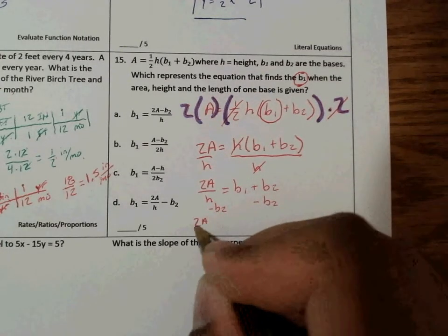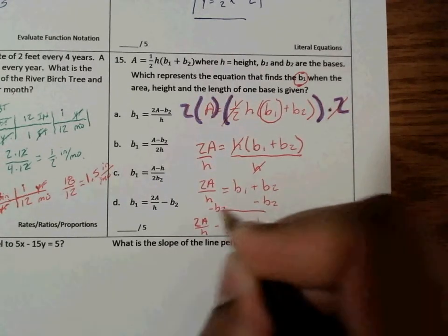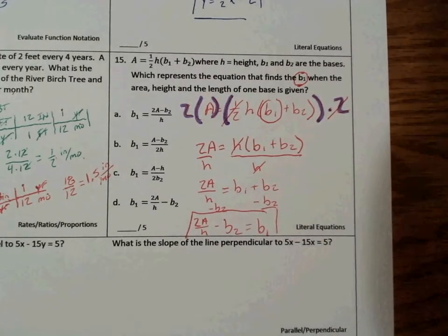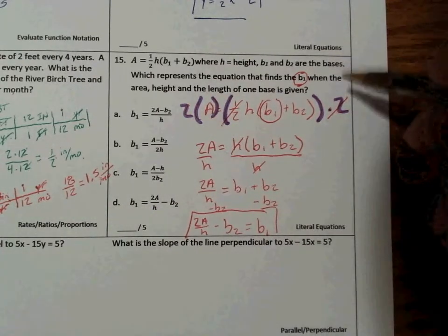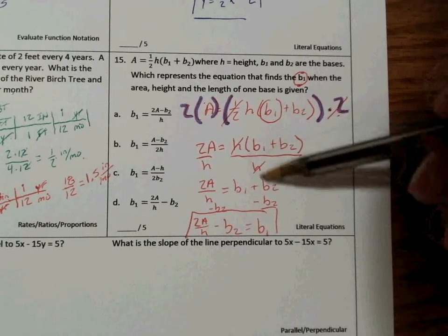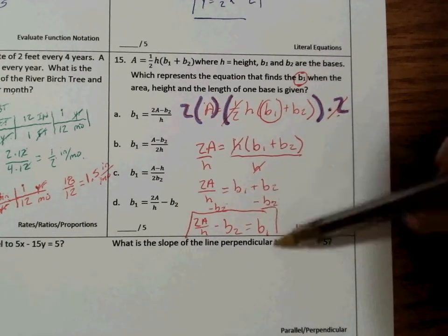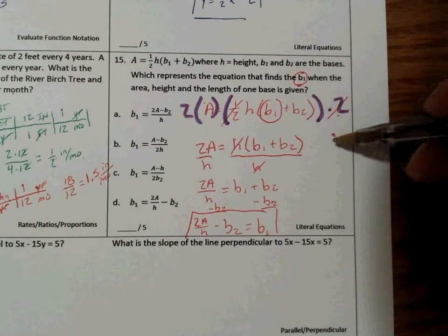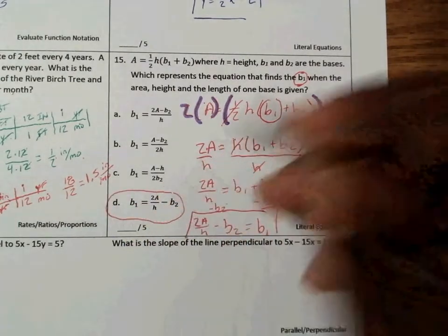This problem is a problem that just takes practice. The most difficult thing or concept that most students have on this problem is this first step: understanding why you can multiply both sides by 2. Because most students, once they get to this point, it's fairly simple: divide by h, you can see that, subtract b2. It's this first step, so please take time to make sure you fully understand this part. From this you can see that the answer is D.